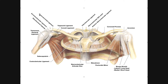We also have the coracoacromial ligament, which connects the acromial process to the coracoid process. This ligament does not connect to the clavicle and therefore cannot stabilize the AC joint. But it does complete the subacromial arch — an arch between the acromion and the coracoid process that restricts upward translation of the humerus and helps prevent subluxation and dislocation of the head of the humerus from the glenoid fossa.